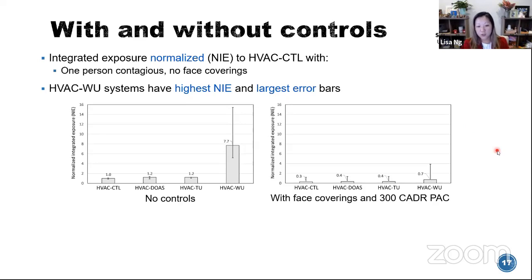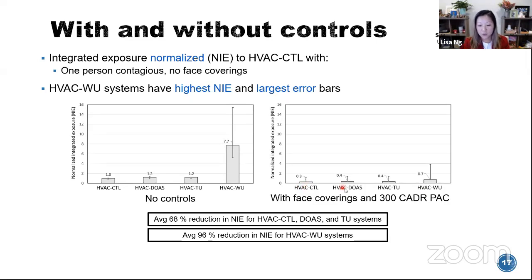On the right I show the integrated exposure still normalized to the central system with no controls. With face coverings and a 300 CADR portable air cleaner, the reduction in exposure decreases to 0.3 to 0.4 for the three HVAC systems and down to 0.7 for the window unit system. On average for the central, DOAS, and terminal unit systems, there's a 68% reduction. For the window unit there's an average 96% reduction. However, because the window unit starts off so much greater than the other three systems, a 96% reduction is still going to result in higher absolute exposure than if you're in a space with the other three systems.